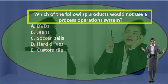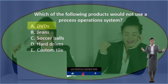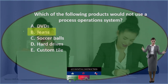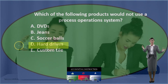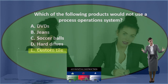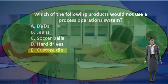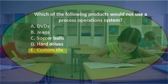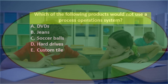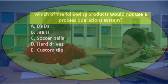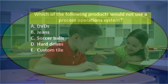First question: which of the following products would NOT use a process cost system? A) DVDs, B) jeans, C) soccer balls, D) hard drives, E) custom tile. We'll go through this and use the process of elimination to see if we can eliminate some of these items.